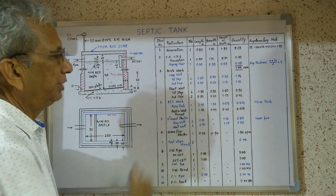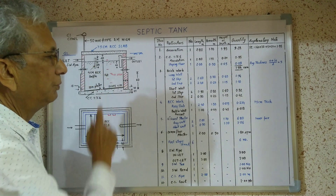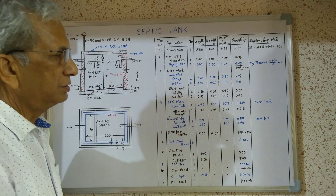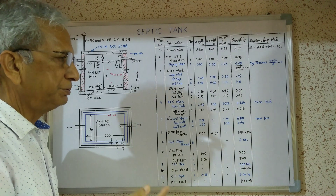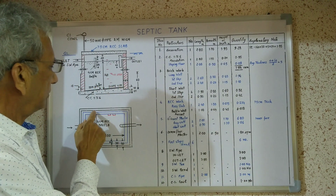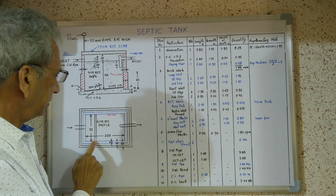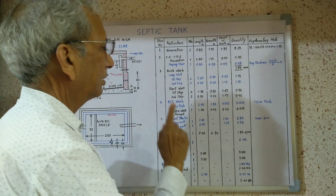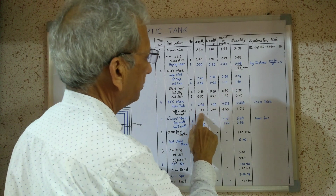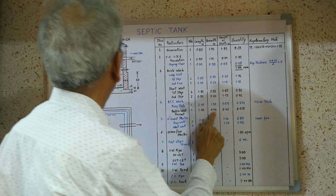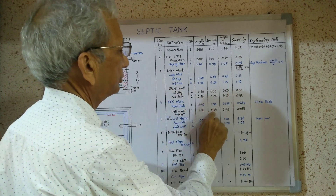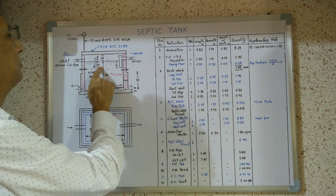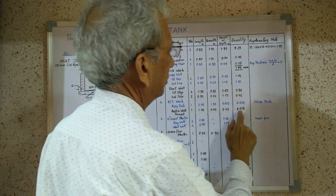Similarly, we calculate the quantity of the baffle wall — one number. Length: internal size 90 cm plus 5 cm going into the wall on each side, giving 90 plus 10 plus 10 equals 1.0 meter. Width of the baffle wall is 4 centimeters. Height is 30 cm plus 15 cm equals 45 centimeters.